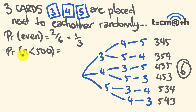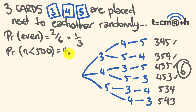For the probability of getting a number less than 500: 345, 354, 435, and 453 are all less than 500 — that's four numbers. So this is a four out of six probability, which simplifies to two out of three. I hope that was helpful, and thank you to the people who commented and helped correct errors in earlier versions of this video.